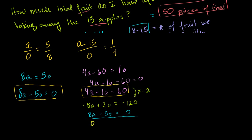This becomes 0A. Minus 5 plus 2 is minus 3O is equal to minus 120. Or O is equal to, divide both sides by minus 3, you get O is equal to 40.